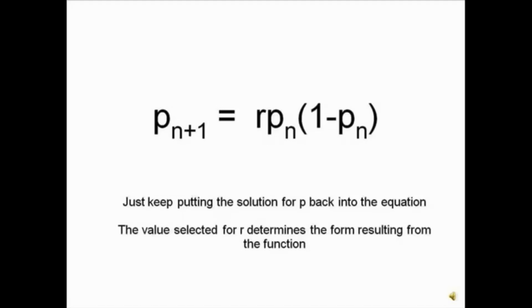You just keep getting what appears as random numbers. But if you have a computer, you can iterate this equation hundreds of thousands or millions of times. Order begins to appear out of chaos.